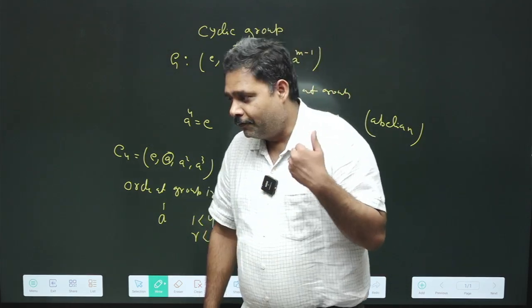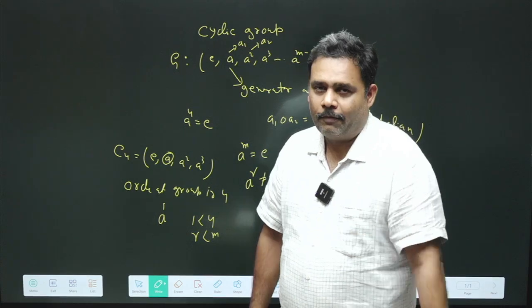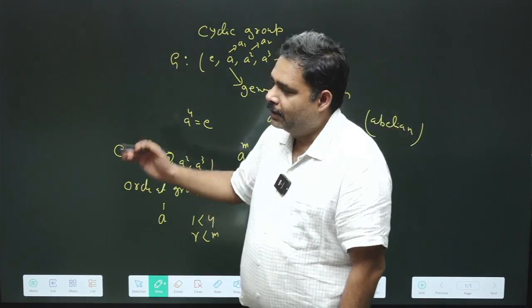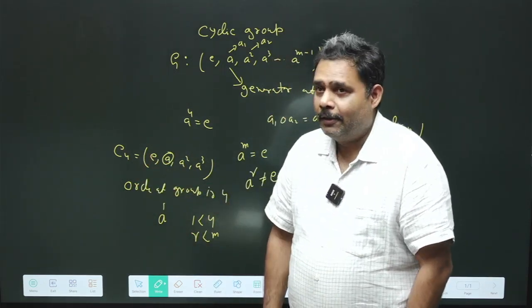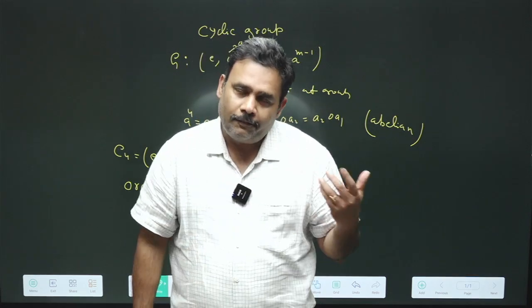Because A to the fourth equals identity, this is very important. First we have to define what is the identity in terms of operation, then we can talk about the order of elements. You have to always keep in mind the difference between order of group and order of element.